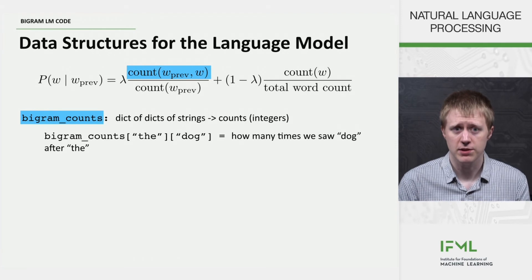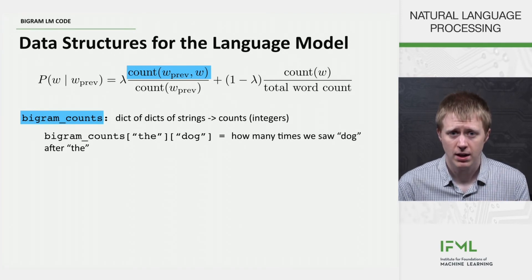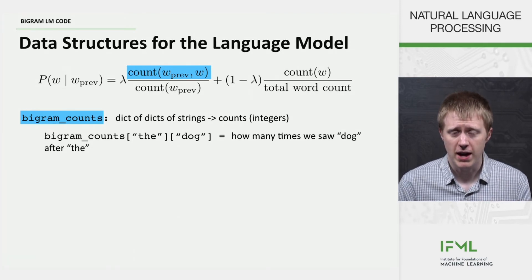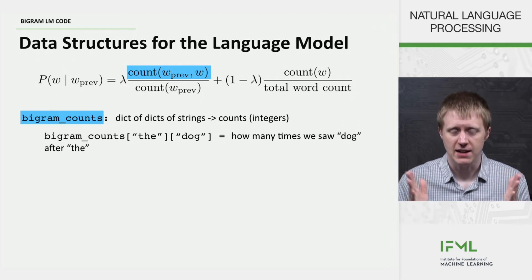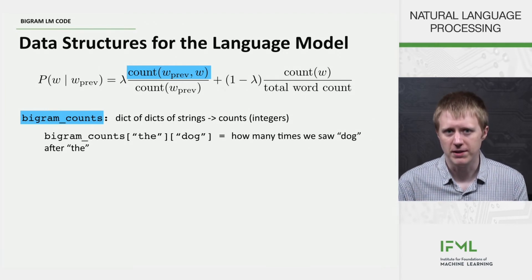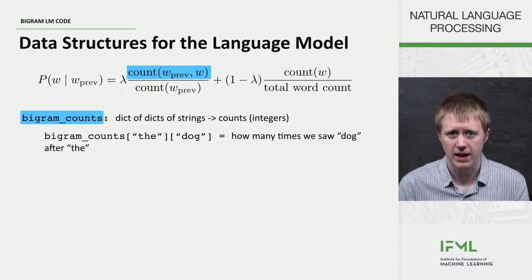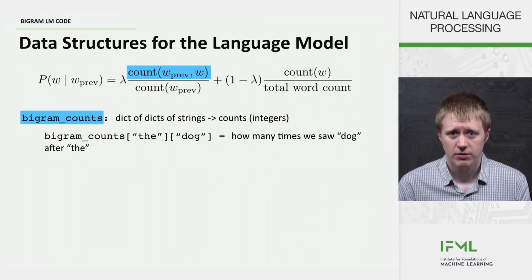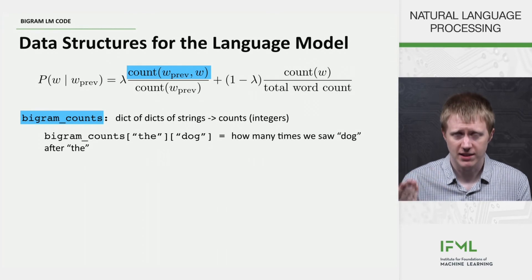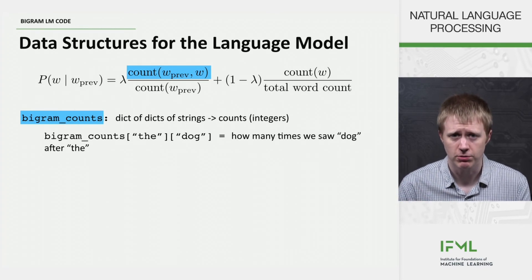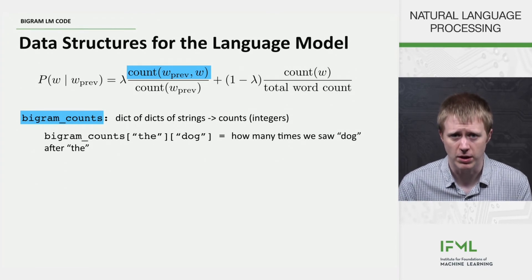And that tells you how many times we saw dog after the. So this is basically just a way of maintaining a set of these word pair counts. And this is how we're going to access these count of w_prev, w that we need for this equation.